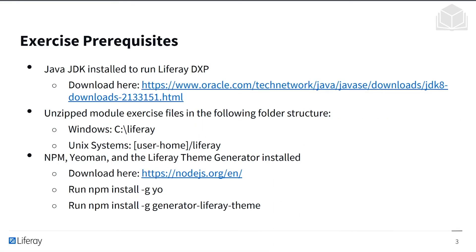To follow along with the exercises in this module, we'll need a couple of things. First, we'll need Java JDK — the Java Developer Kit — installed to run Liferay DXP, and there's a download link provided. If it's your first time setting up Java, you'll also have to configure a JAVA_HOME environment variable. You can Google for instructions on how to do that on your respective operating system.